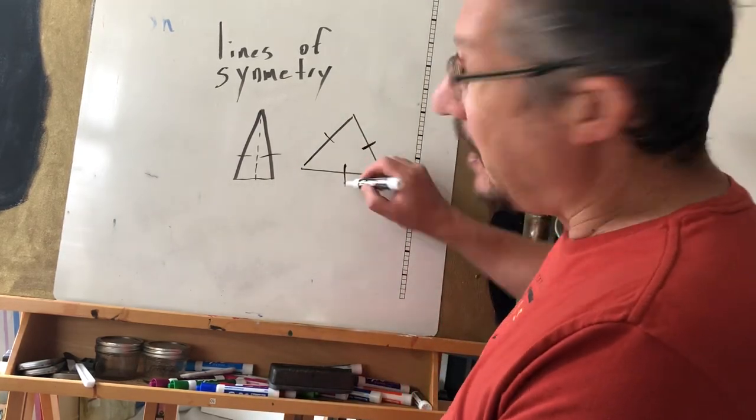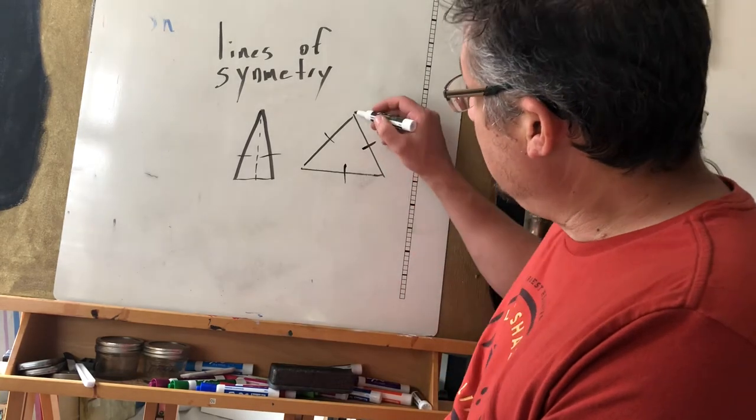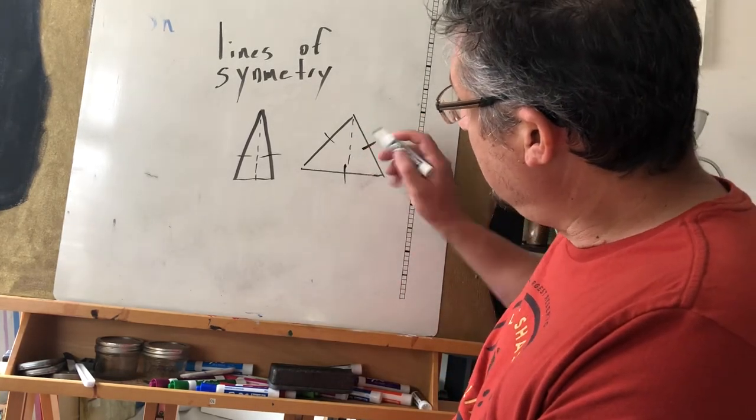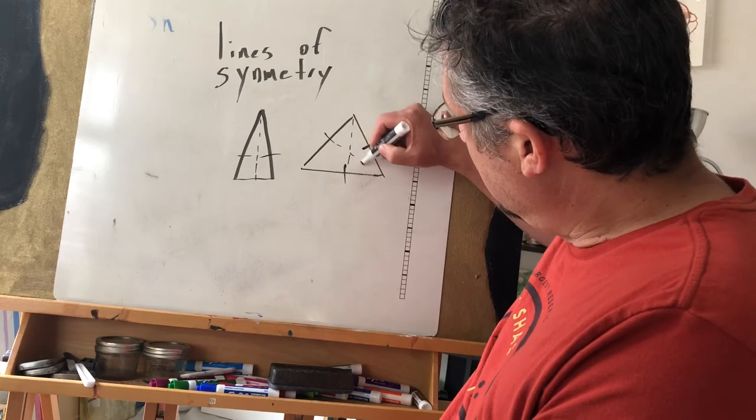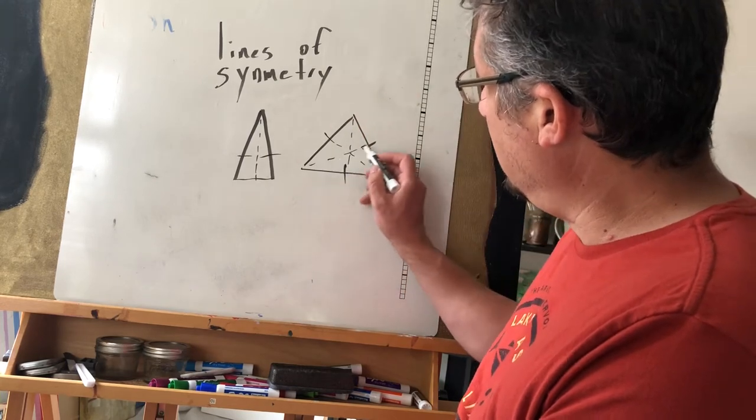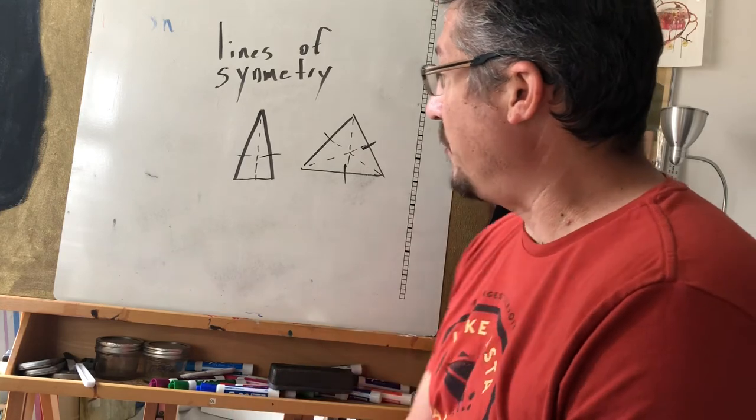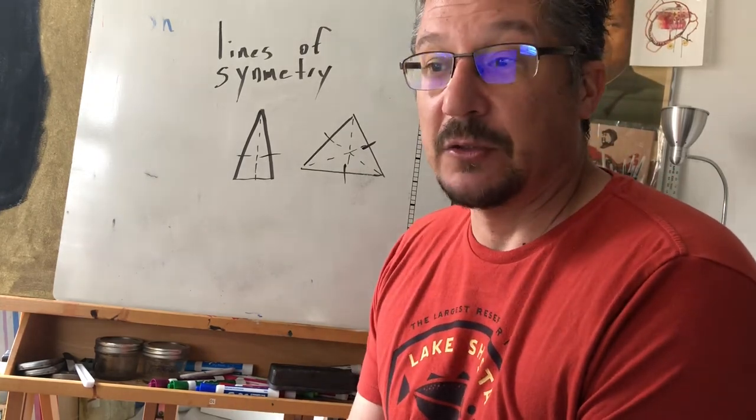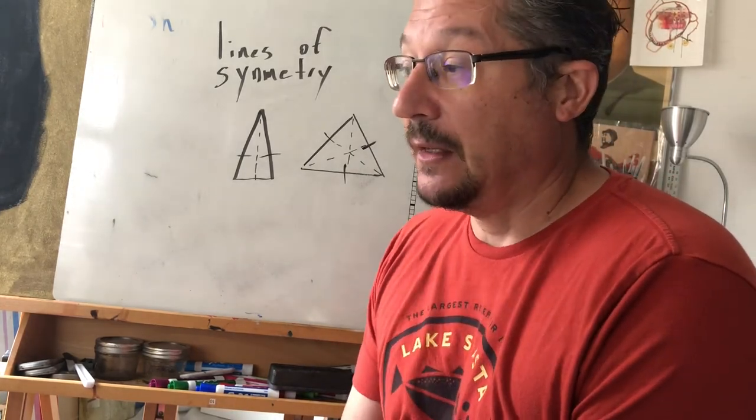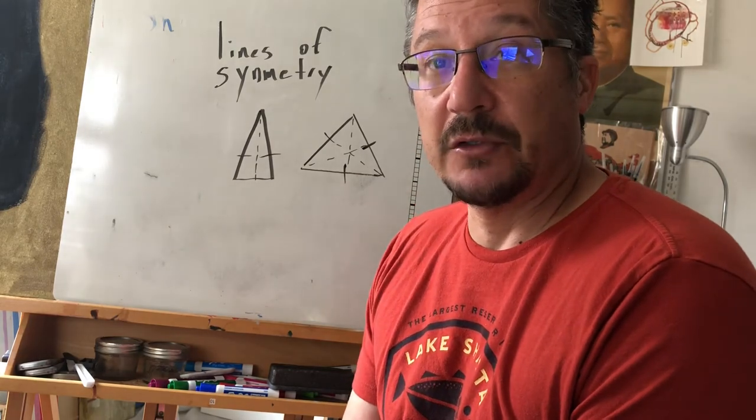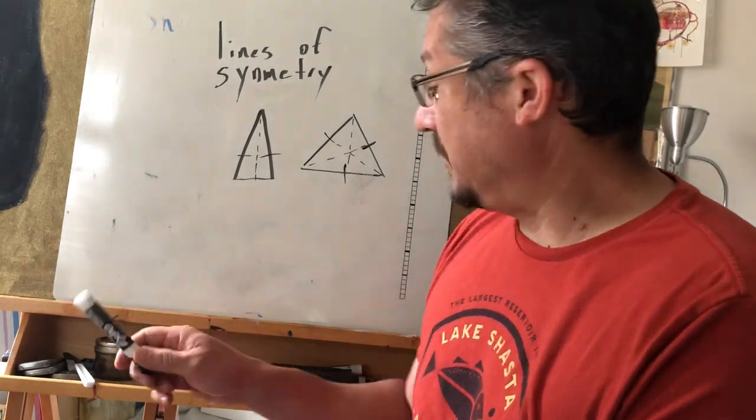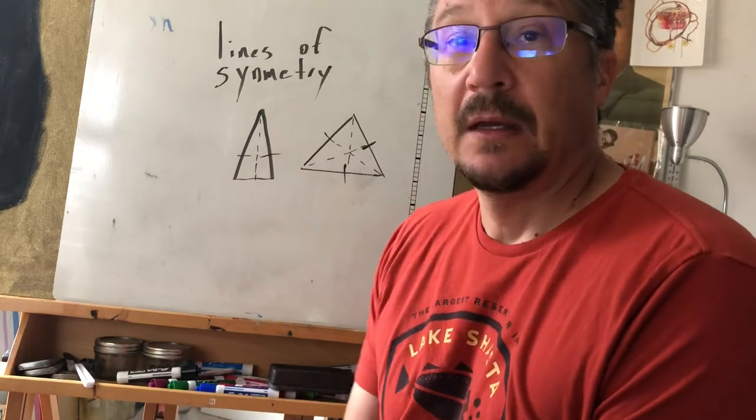And which means it's gonna have one line of symmetry, two lines of symmetry, three lines of symmetry. So some triangles have more than one line of symmetry. Okay, and that's it. It's a very short little add-on but I wanted to make sure I got lines of symmetry in there. Okay, thanks guys.